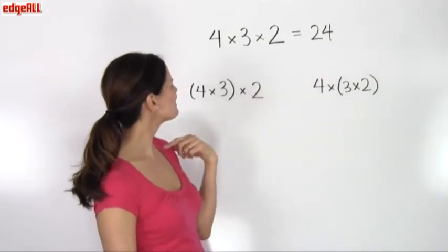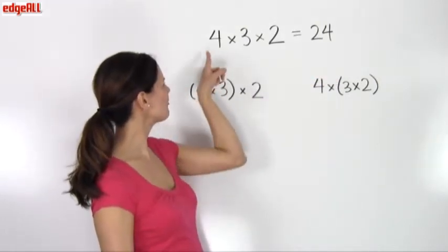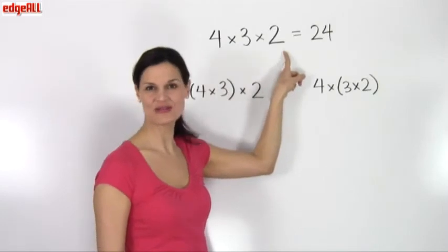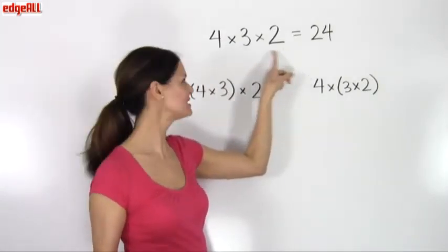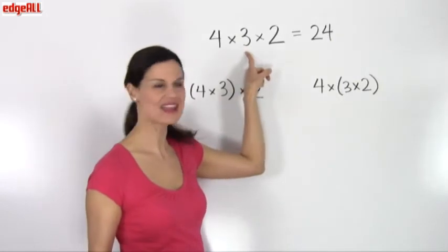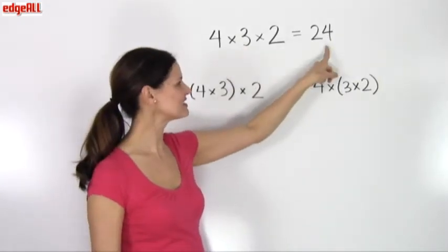It also tells me that I could do 4 times 2 first. 4 times 2 equals 8, and then times 3. 8 times 3 also equals 24.